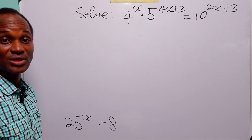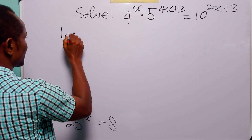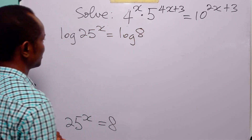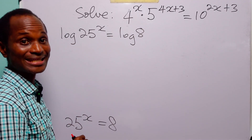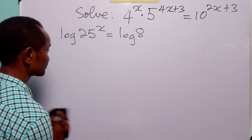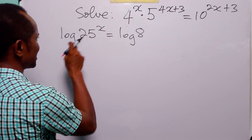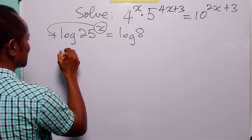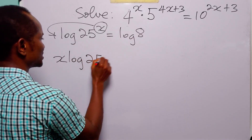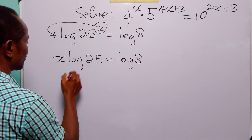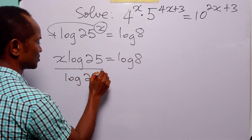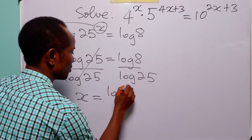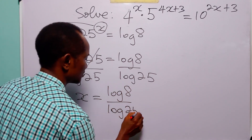The next step to solving this equation is to take the log of both sides. So we have log of 25 to the power x equals log 8. When we write log without specifying the base, it means we are working in base 10. Applying the power law to the left hand side, we bring down the power x to become a multiplier, giving us x times log 25 equals log 8. Dividing both sides by log 25, we have x equals log 8 over log 25.